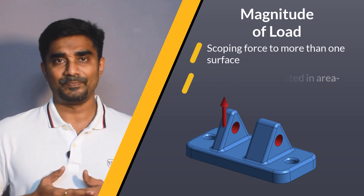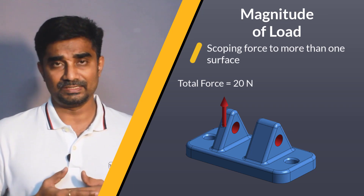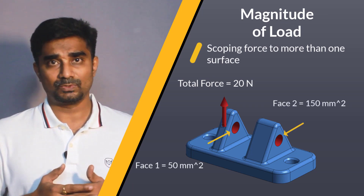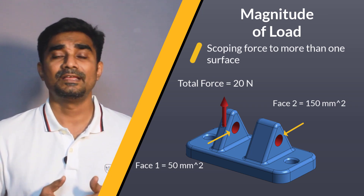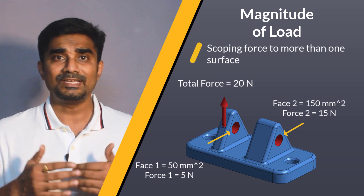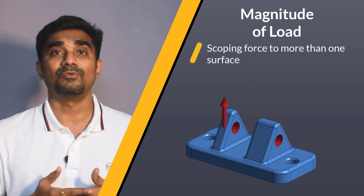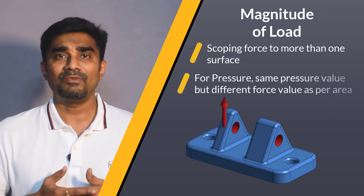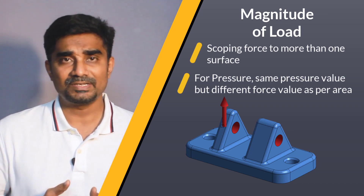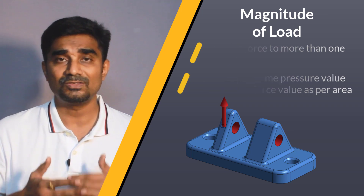For example, we are applying 20N force to two surfaces: one with 50 mm square and second with 150 mm square. In this case, it will apply 5N and 15N force to each surface respectively, and not 20N to each surface. For pressure, it is defined by force per area, so all the scoped surfaces will have the same pressure value, but the actual force will depend on the size of the area.